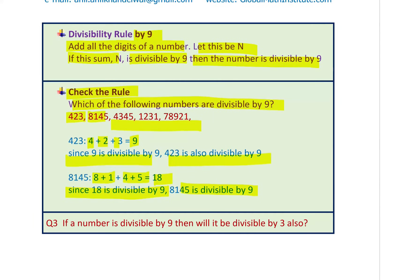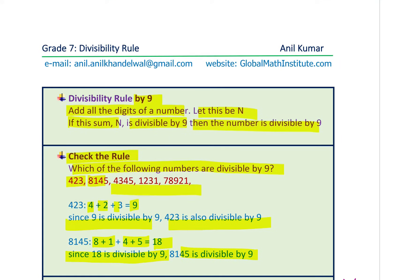Question 3: If a number is divisible by 9, will it also be divisible by 3? Think about it. The answer is yes — since 9 is divisible by 3, any number divisible by 9 should also be divisible by 3.